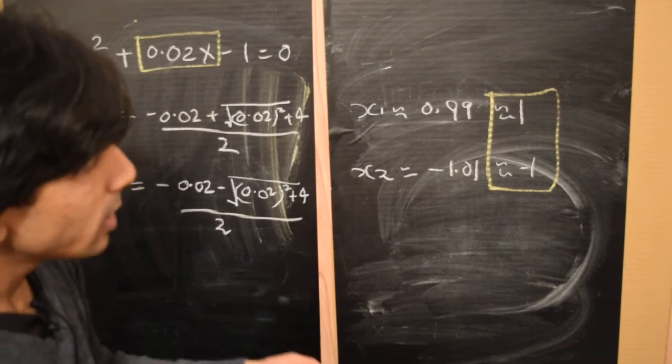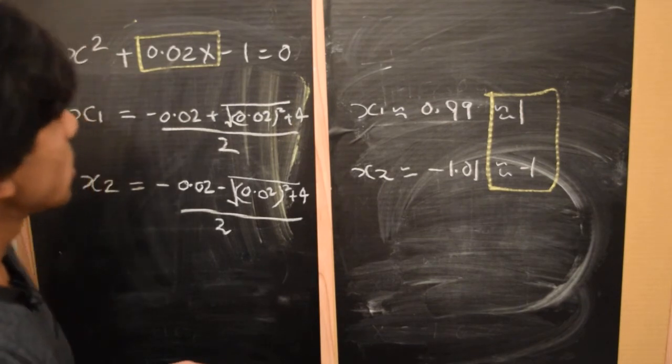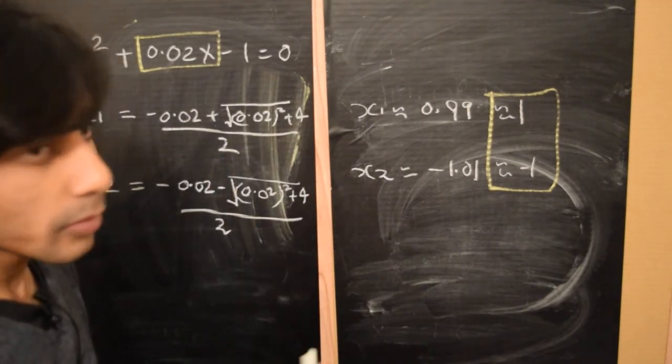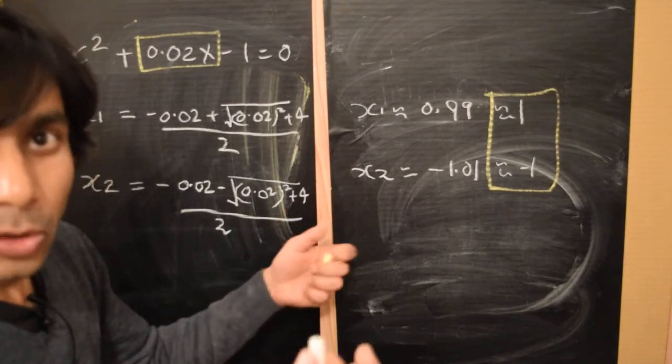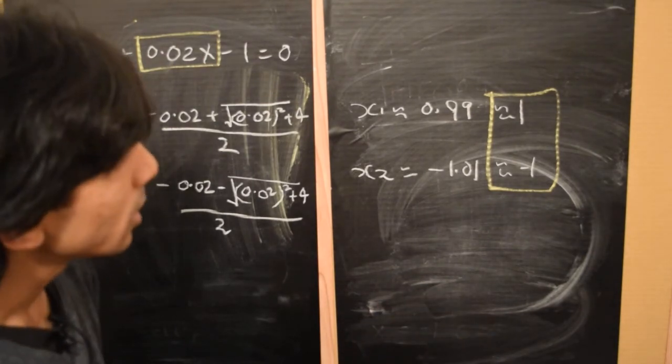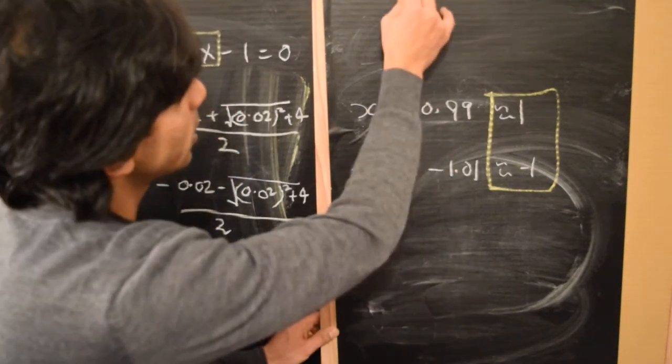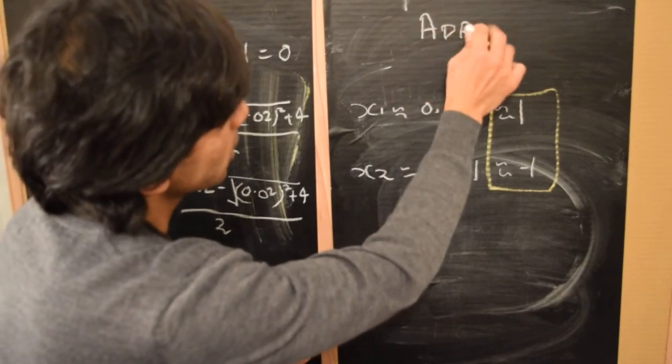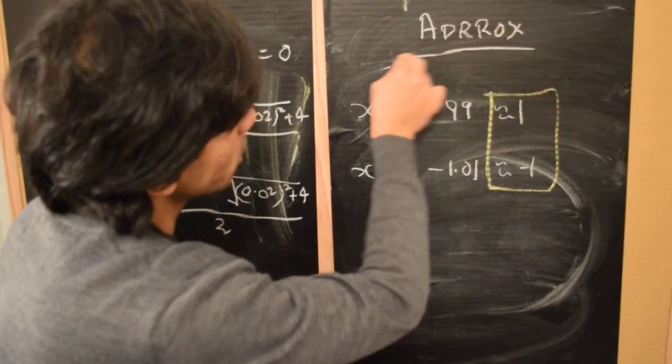And this suggests that we can look for a simpler equation to begin with, which can be obtained by dropping the middle term and then looking for its solutions as a way of guessing the 0th order solution of the quadratic equation. So that approximate equation would be...